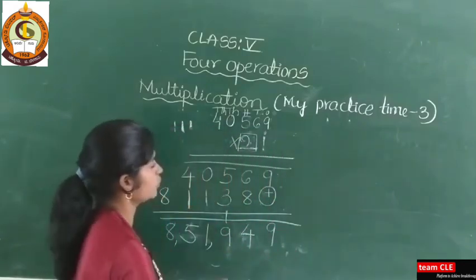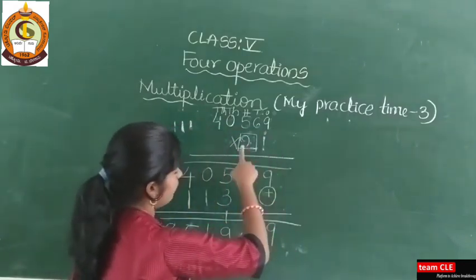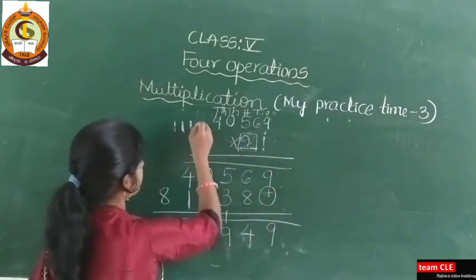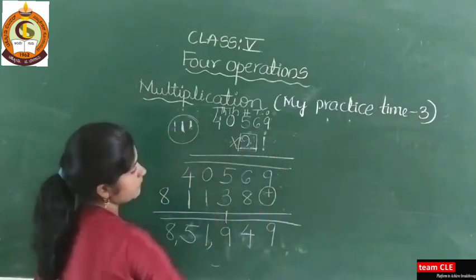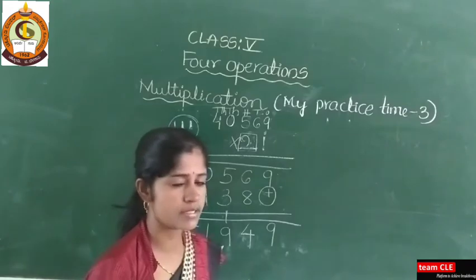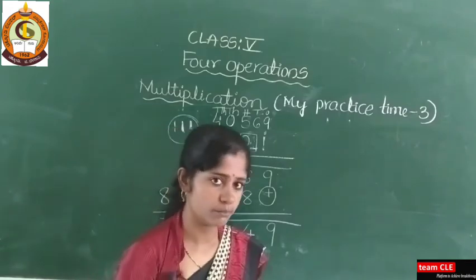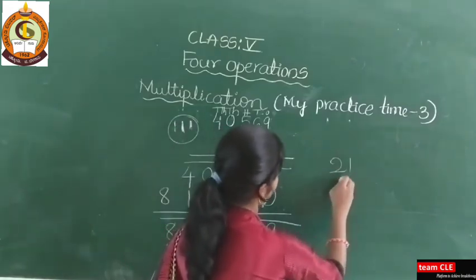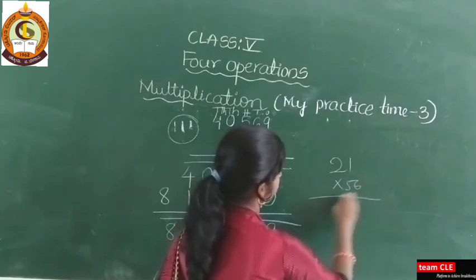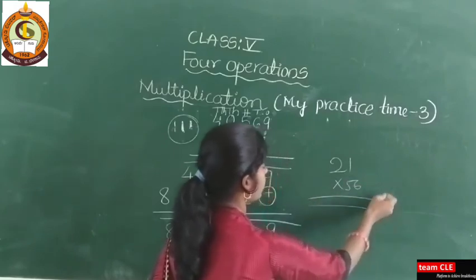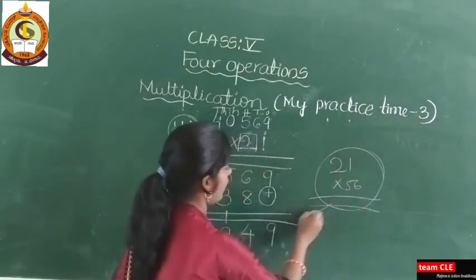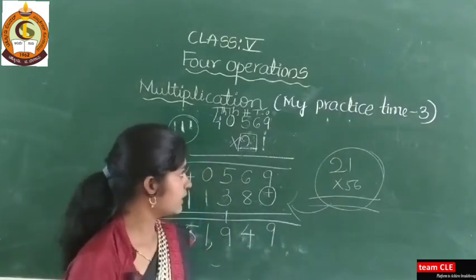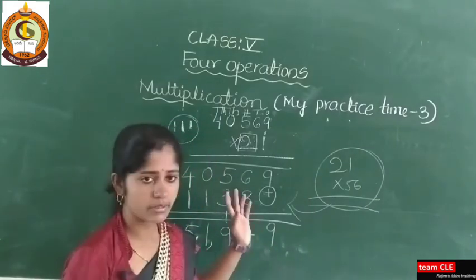Here you need to multiply one time with one and one time with two. Keeping carry and adding the carry is also important. Last year you studied 21 into 56 — this type is similar but not exactly the same. Similarly you have to solve these examples, but here the digits are more.